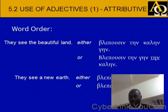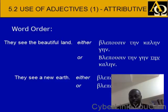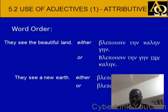So we have some examples: they see the beautiful land — it can either be blepousin ten kalen gen, or blepousin ten gen ten kalen. You can see that kalen and gen share both gender, case, and number. They see the new earth — blepousin kainen gen, or blepousin gen kainen. You can see that kainen and gen both share the same case, gender, and number.